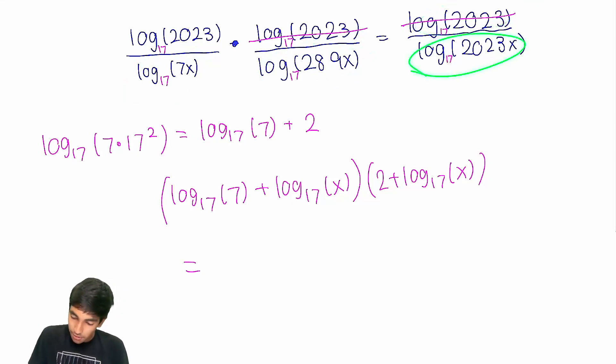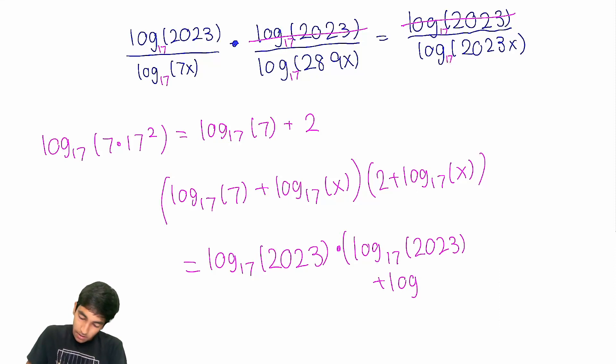We can move this to the other side because we don't want to deal with denominators. Therefore we get log₁₇(2023), I'm just not going to break it up, you'll see why in a moment, times log₁₇(2023x), which is just log₁₇(2023) plus log₁₇(x).